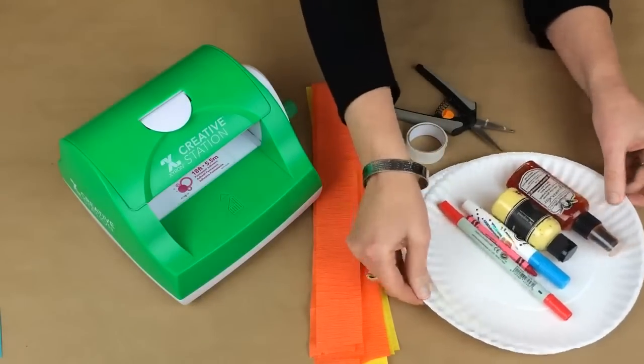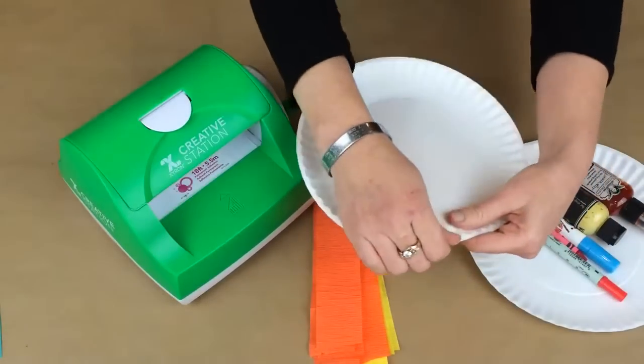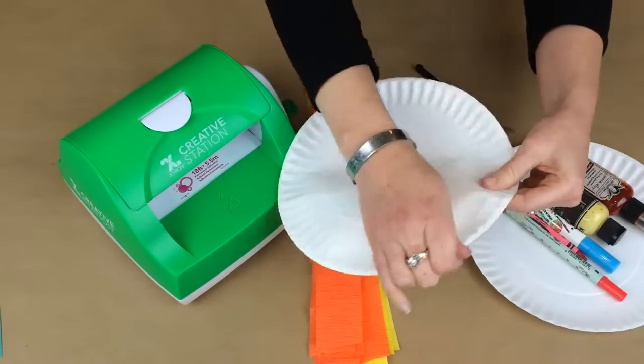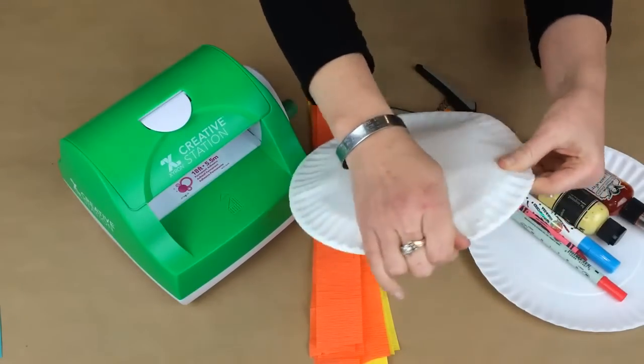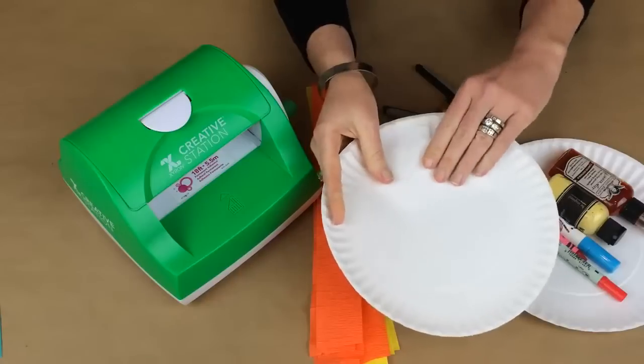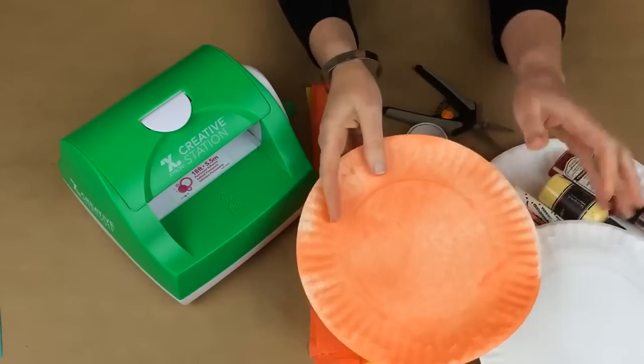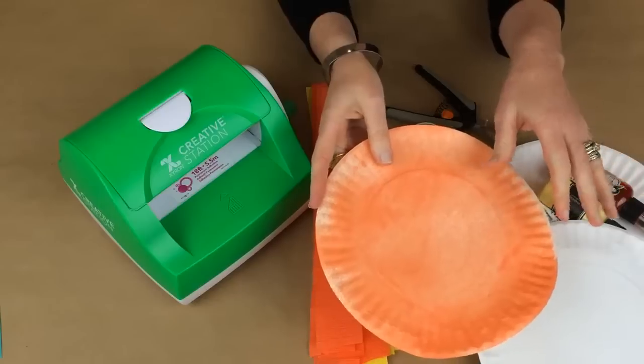So the first thing you're going to do is take your paper plate and run your hands along the edges. This isn't going to completely flatten it out but it's going to give you a flatter surface. Then you're going to go ahead and color that however you'd like. I went ahead and misted mine orange, so once it's dried or once it's completely covered,